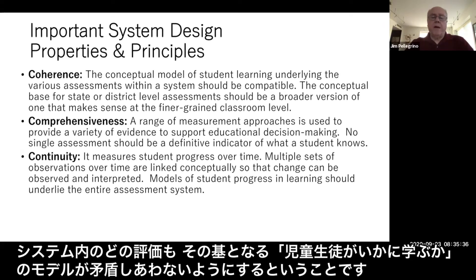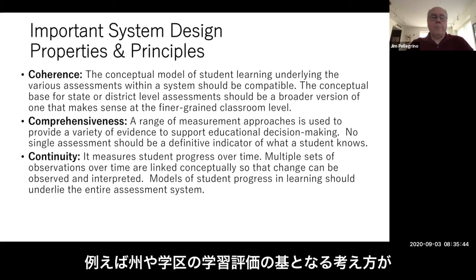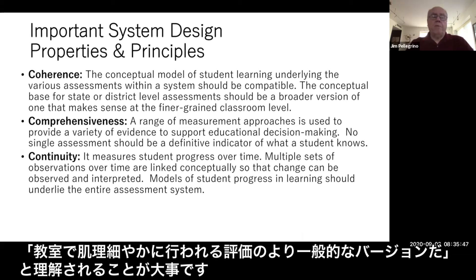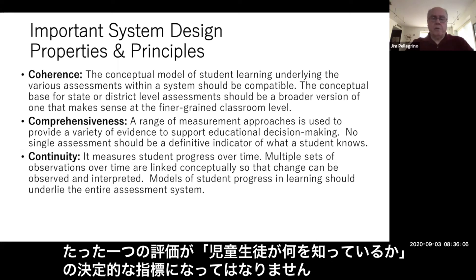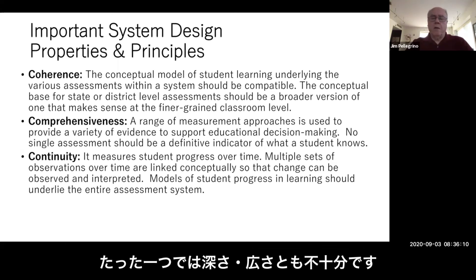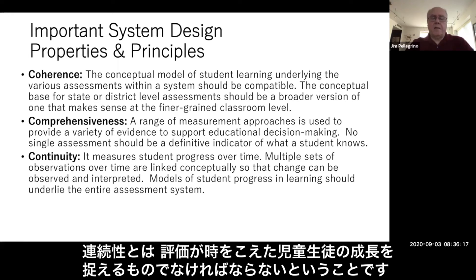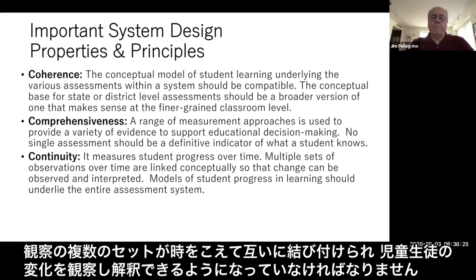By coherence, we mean that the conceptual model of student learning underlying the various assessments within the system should be compatible — for example, the conceptual base for a state or district level assessment should be a broader version of one that makes sense at the finer-grained classroom level. By comprehensiveness, we mean that a range of approaches are used to provide a variety of evidence to support educational decision making — no single assessment should be a definitive indicator of what a student knows. Continuity refers to the fact that the system should be able to measure student progress over time, with multiple sets of observations conceptually linked so that change can be observed and interpreted.